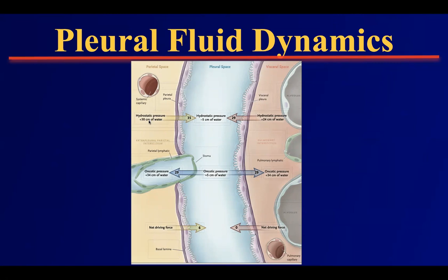Hydrostatic pressure is about 30 centimeters of water from the mesothelial cells to the pleural space. There is also a balancing hydrostatic pressure of the visceral pleural system — created by the lung — which is about 29 centimeters of water. Oncotic pressure is the same for the pleural space, which is 29 centimeters of water, and also 29 for the parenchyma. The net driving force is 6 centimeters of water inside the pleural space, which produces the pleural fluid continuously.